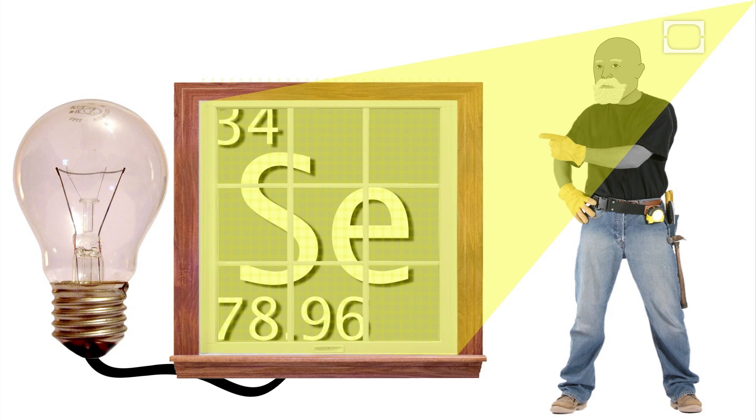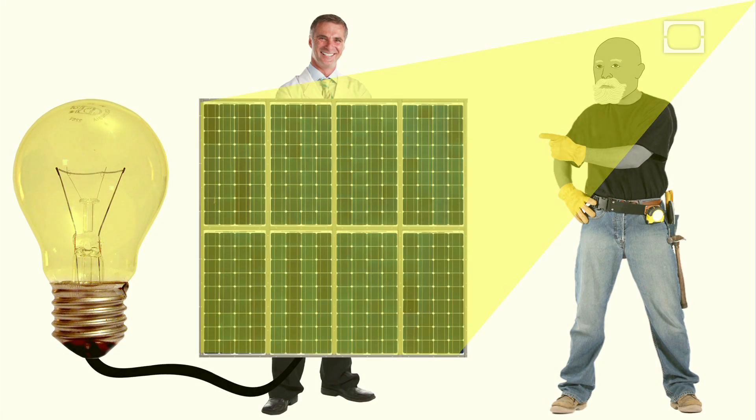Fortunately, Charles' breakthroughs inspired other scientists, such as Russell Ohl, who improved the design and patented the first modern solar cell.